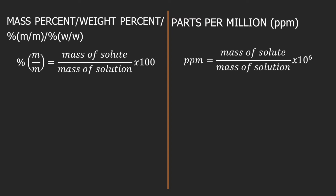On the other hand, parts per million or PPM is equal to mass of solute divided by mass of solution, times 10 raised to the 6, or 1 million.